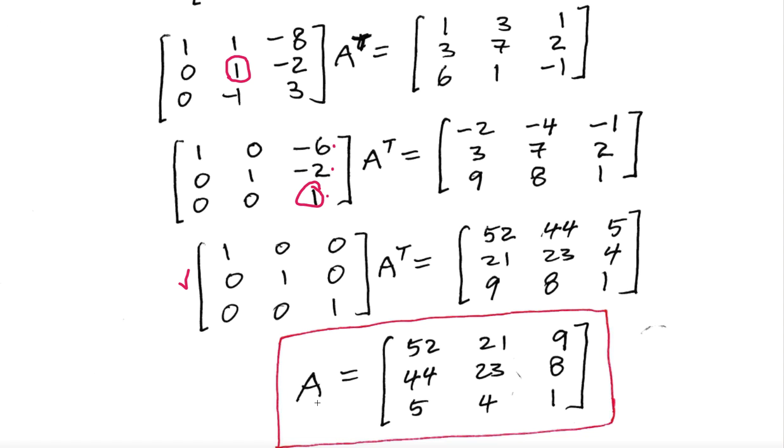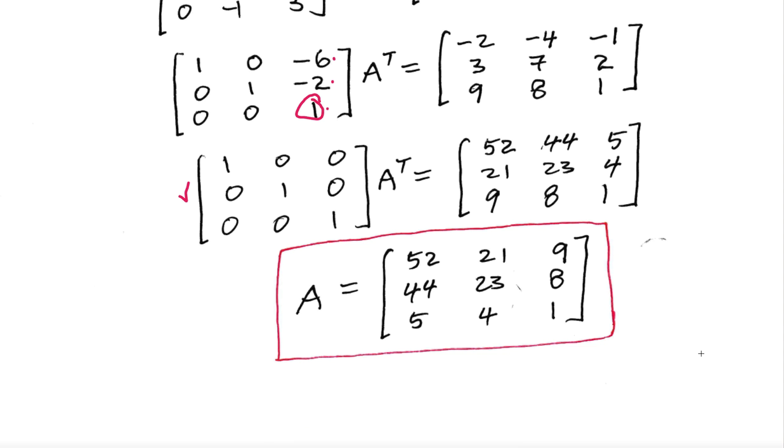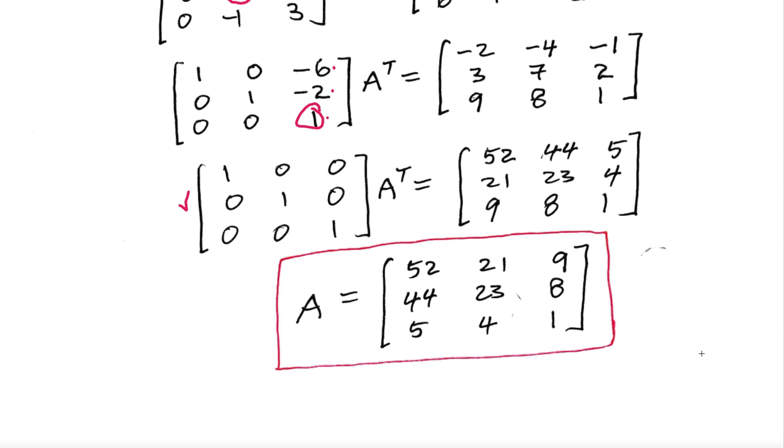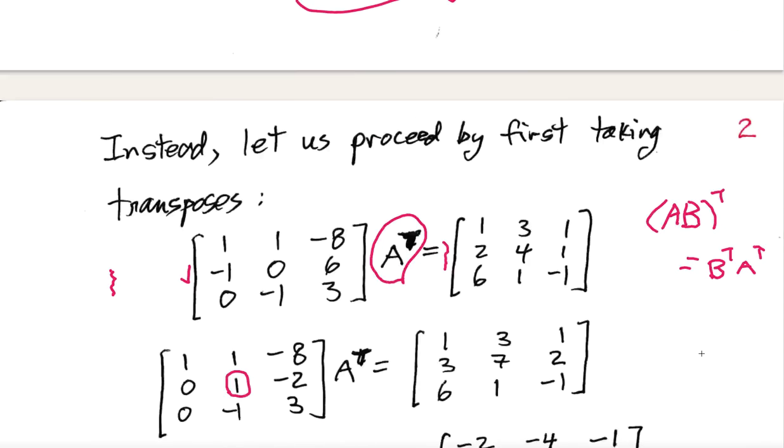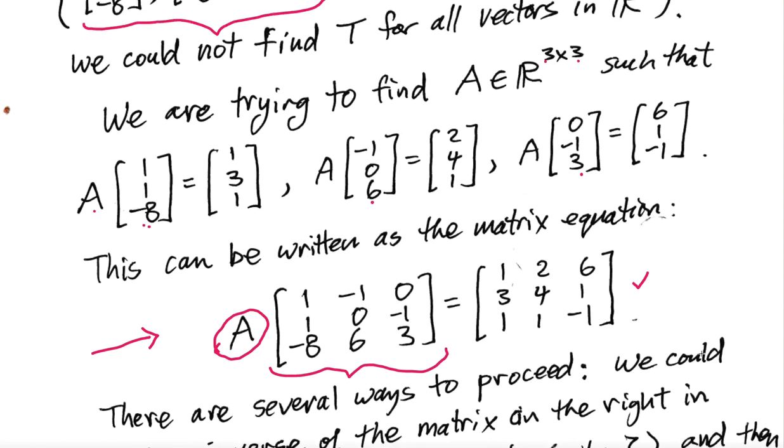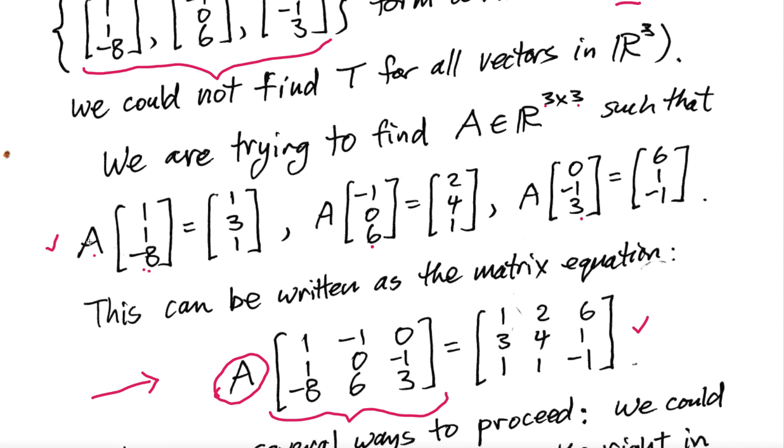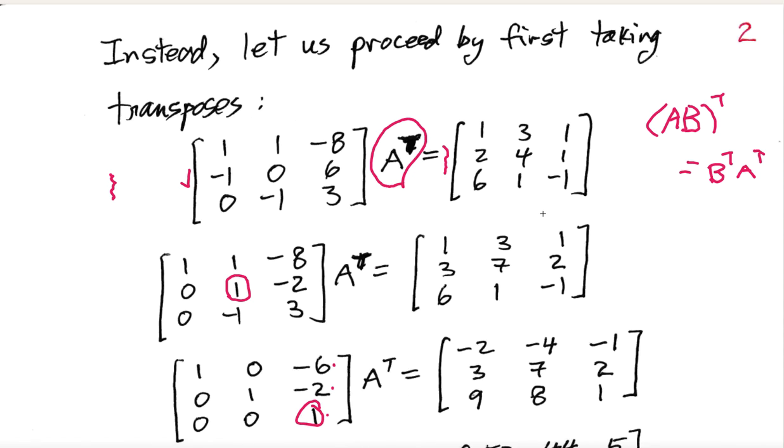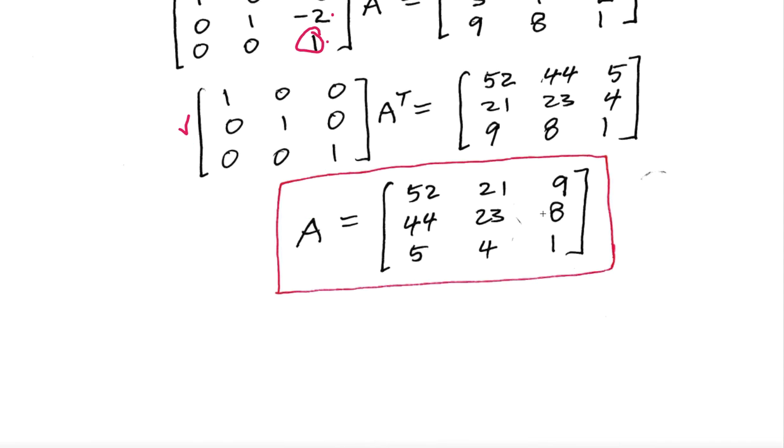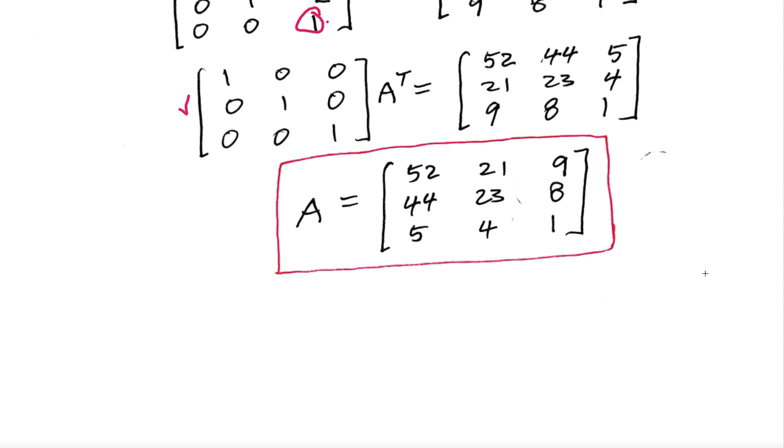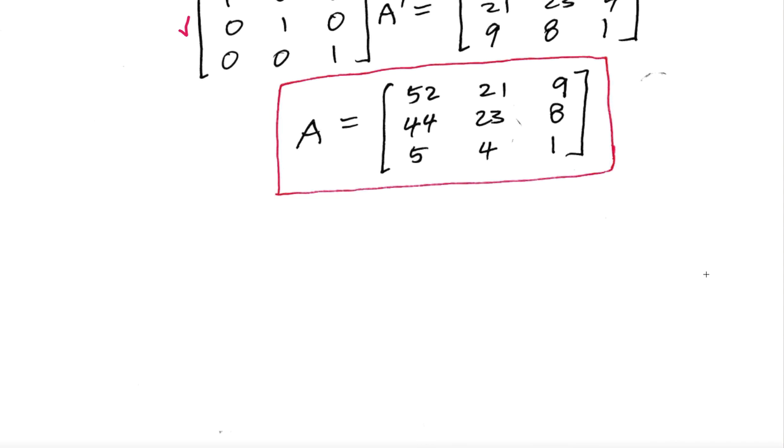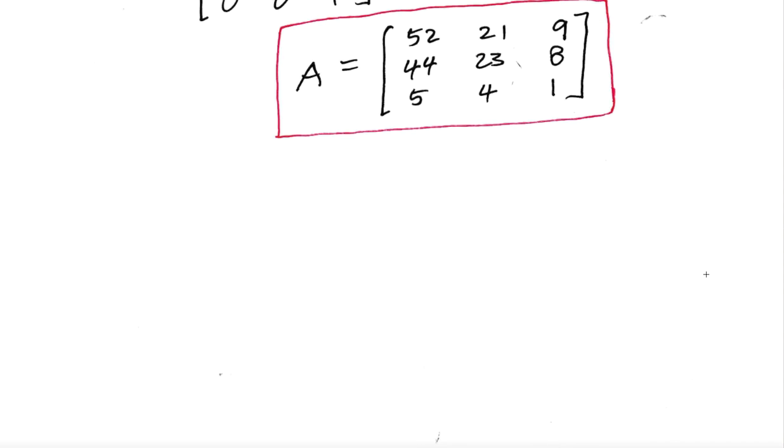And I get A is (52, 44, 5; 21, 23, 4; 9, 8, 1). And if you take that matrix and multiply it on these vectors here, you will get the corresponding vectors here. So it works. Because I actually checked it here, though I did not show my check. But anyways, that should help you with some of the homework exercises. All right.